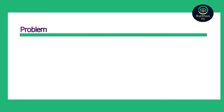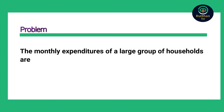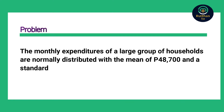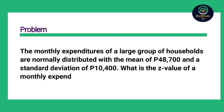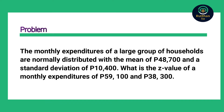Problem: The monthly expenditure of a large group of households are normally distributed with a mean of P48,700 and a standard deviation of P10,400. What is the Z-value of monthly expenditure of P59,100 and P38,300? In relation to our problem, we were asked to find two particular expenditures and how far they are away from the mean.